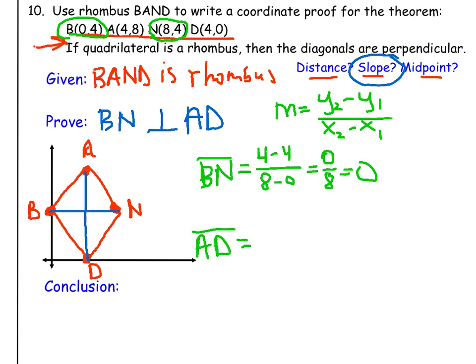We can see that AD looks like it's a vertical line, we're going to prove it. So again, we're going to use, this time we're going to use the points A and D.